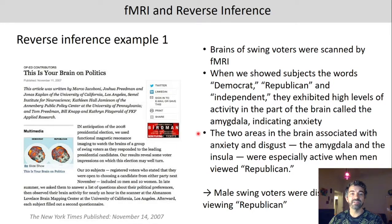The two areas in the brain associated with anxiety and disgust — the amygdala and the insula — were especially active when men viewed the word 'republican.'